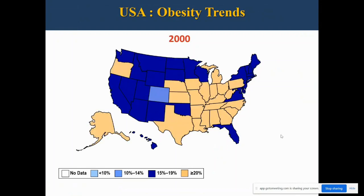Over 10 years, two additional categories — 15 to 19% and more than 20% — had to be added. In fact, the original 10 to 14% range, which covered most of the nation, was now in the minority. And this gets even scarier as we go over the next 10 years.